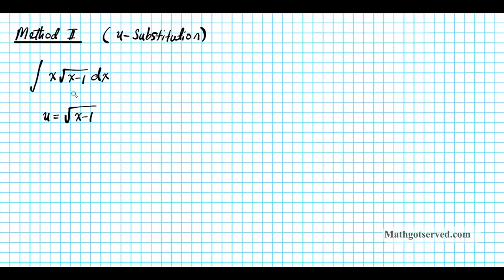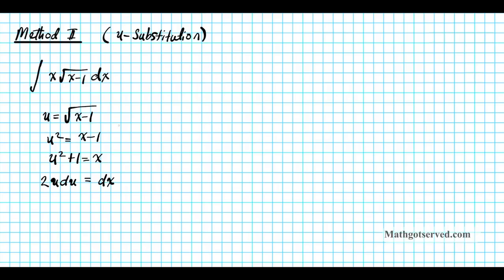For Method 2, I'm going to call u equal to the square root of x minus 1, so I can substitute that piece with u. To isolate x, I'll square both sides: u squared equals x minus 1, so x equals u squared plus 1. To find dx, I differentiate both sides implicitly: 2u du equals dx.